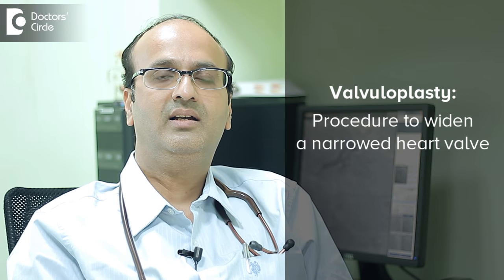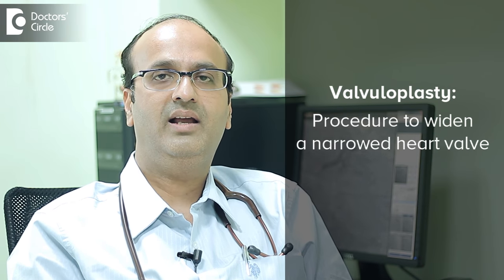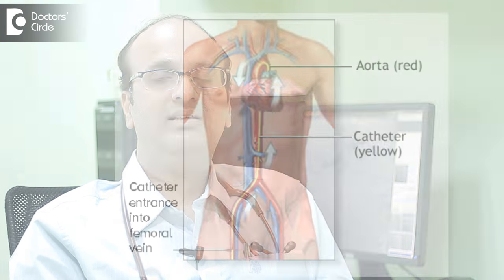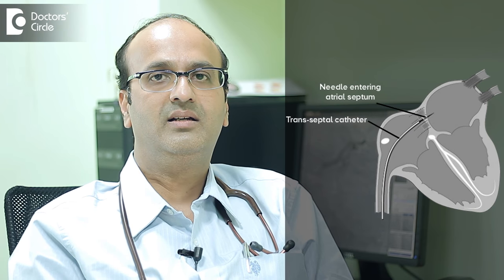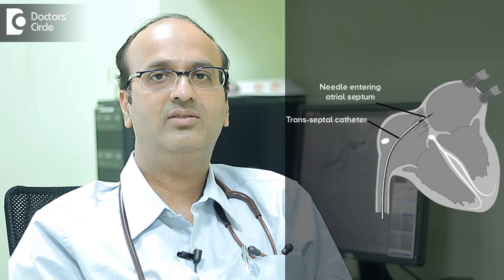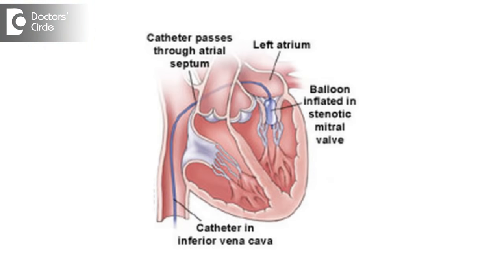So basically what we do in valvuloplasty is, depending on which valve we want to dilate, the access is either trans arterial or trans venous route. For example, if we want to dilate the mitral valve, we access the femoral vein in the groin and then do what is called a transseptal puncture, take the venous route and gain access to the left side of the heart, and then we dilate the valve with the valvuloplasty balloon.